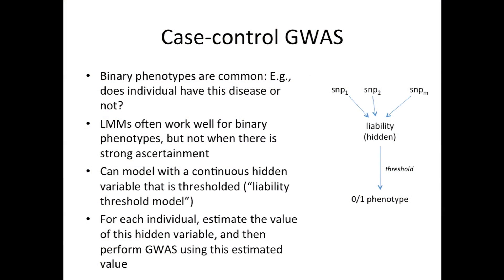Here's one example of doing that — this is for case-control genome-wide association studies, where we have a binary phenotype: does the patient have the disease or not? Linear mixed models aren't designed to work with 0-1 phenotypes; they're designed to work with continuous phenotypes. So we take our original 0-1 data and transform it to data with continuous phenotypes, then apply the linear mixed model to that transformed data. The transformation uses what's called a liability threshold model: SNPs influence a hidden variable called the liability, and that hidden variable is thresholded to produce the 0-1 data. We push the data through this model, estimate values for this hidden variable, and use those values with the linear mixed model to do the association analysis.